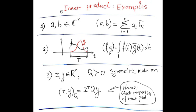Now we will look at three examples of inner product. First example: let A and B be n-dimensional complex vectors. Then inner product of A with B is just the sum of elementwise products of component of A, A_i, by the complex conjugate B_i.